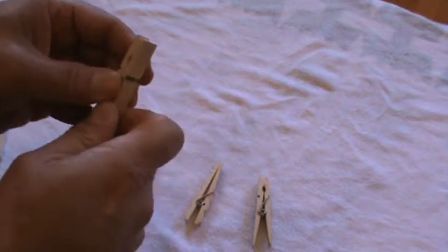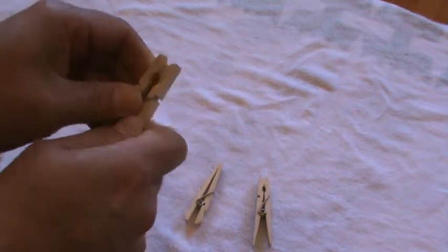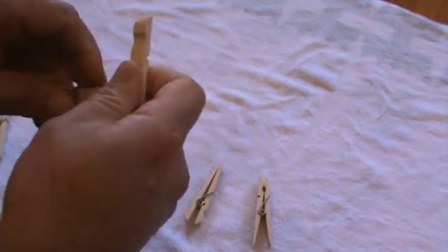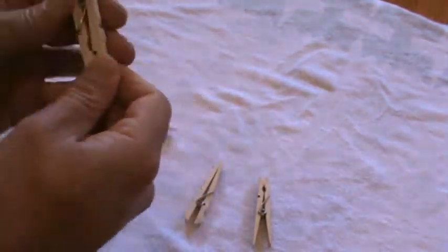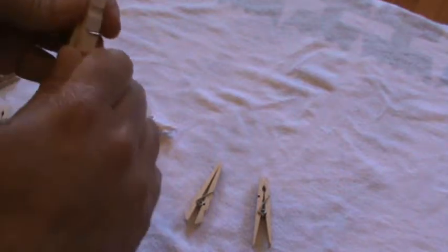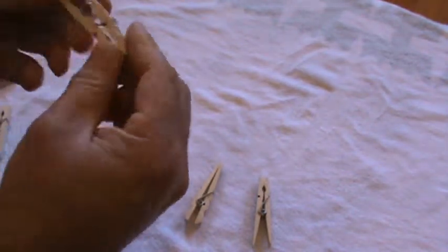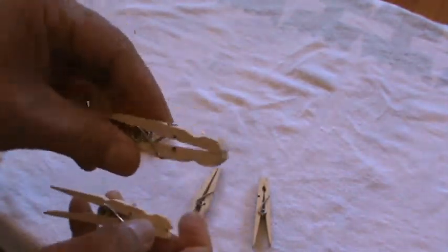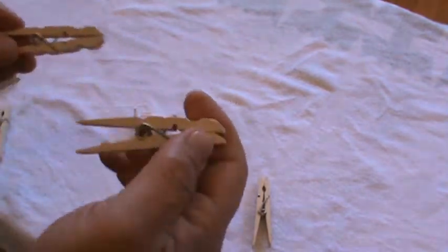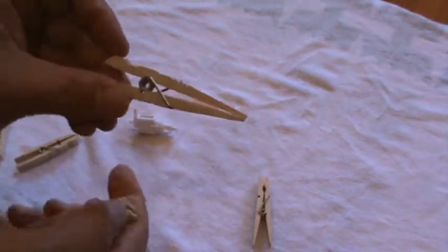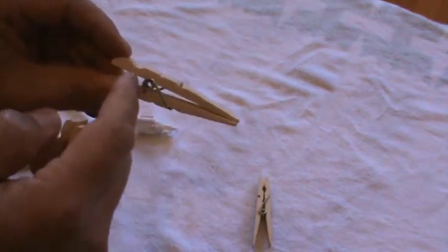Well, you take your ordinary clothespin and you just pop the side out and push the other side in. Depending on where you want it, like if you want it to close on the front like this one, you put the spring further back.